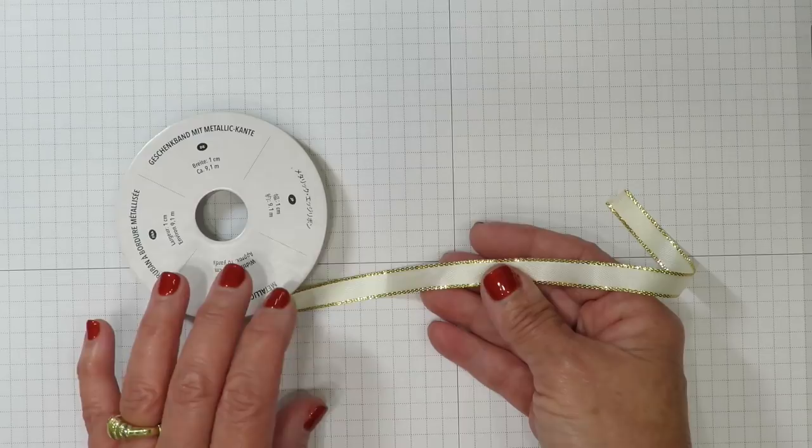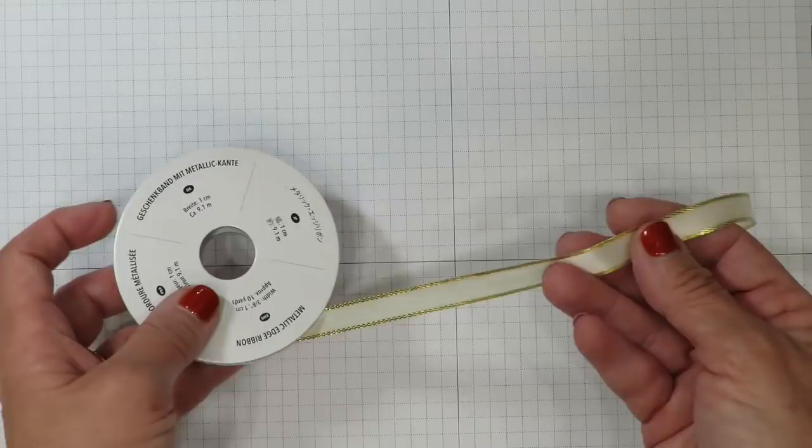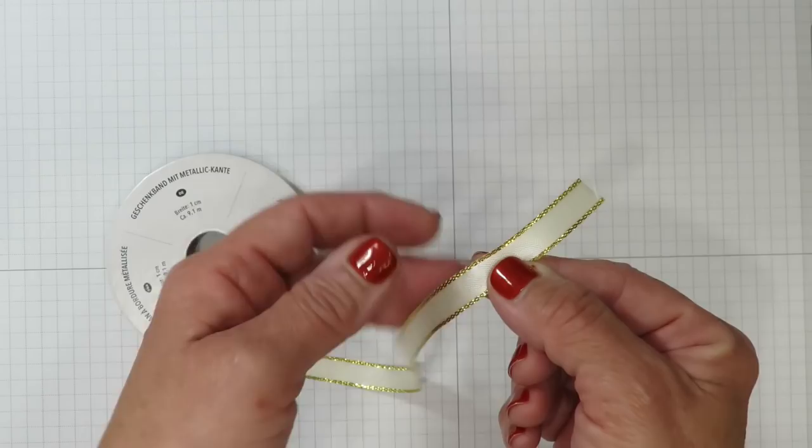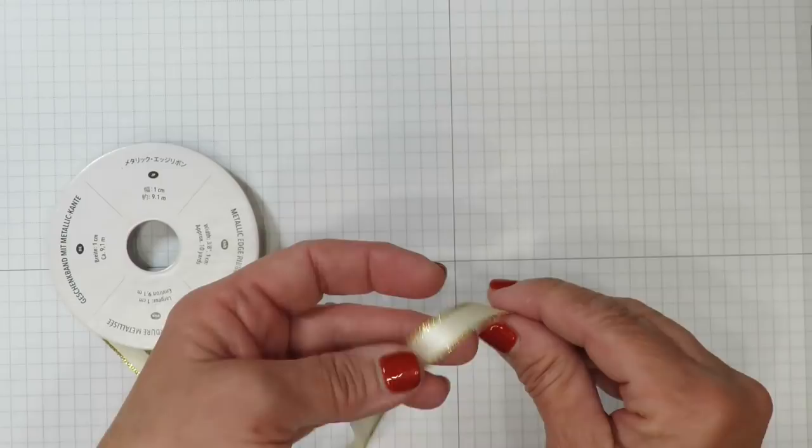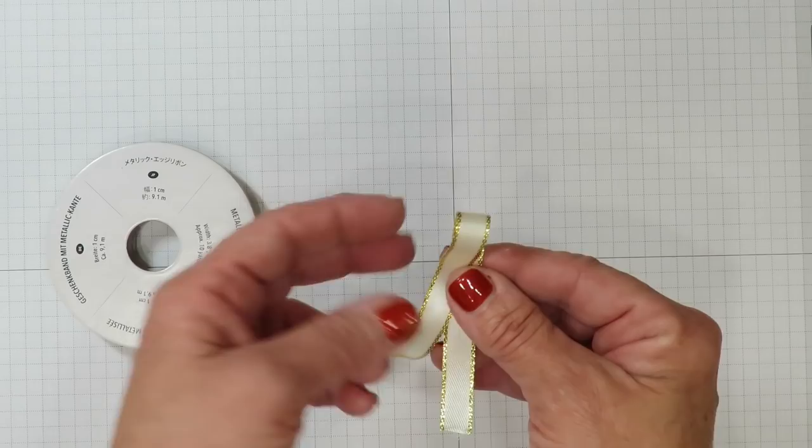I've got the beautiful gold metallic edge ribbon here. It also comes in silver. The gold has a vanilla base down the center and the silver has white. Let's start by just making the bow. This is a satin ribbon and I find that most people struggle with this type of fabric more so than anything else because it's slippery.